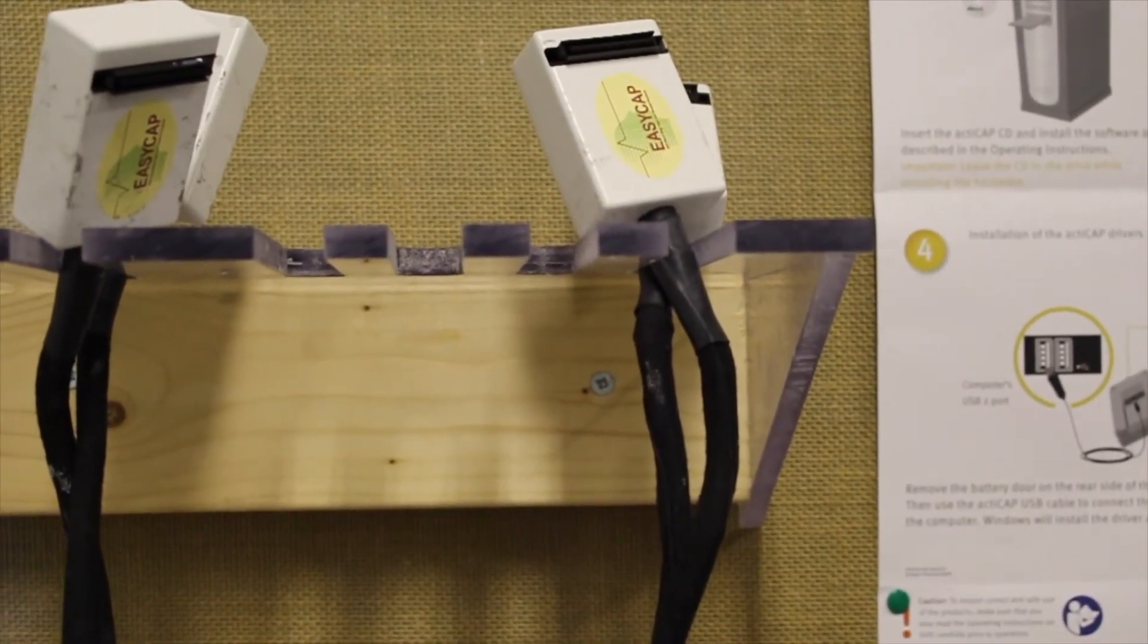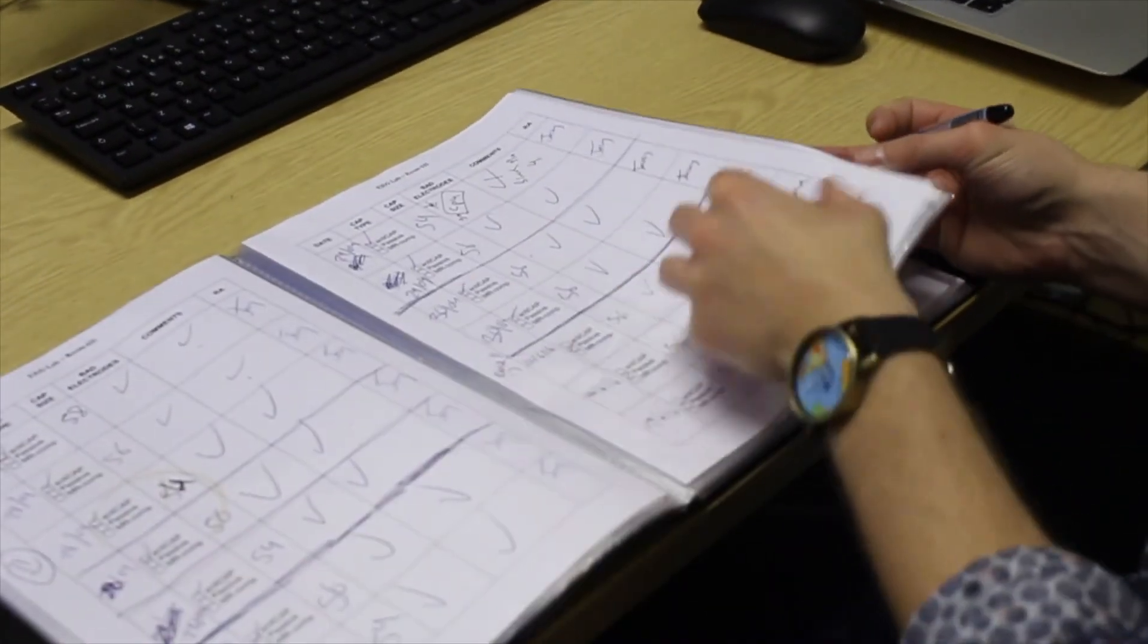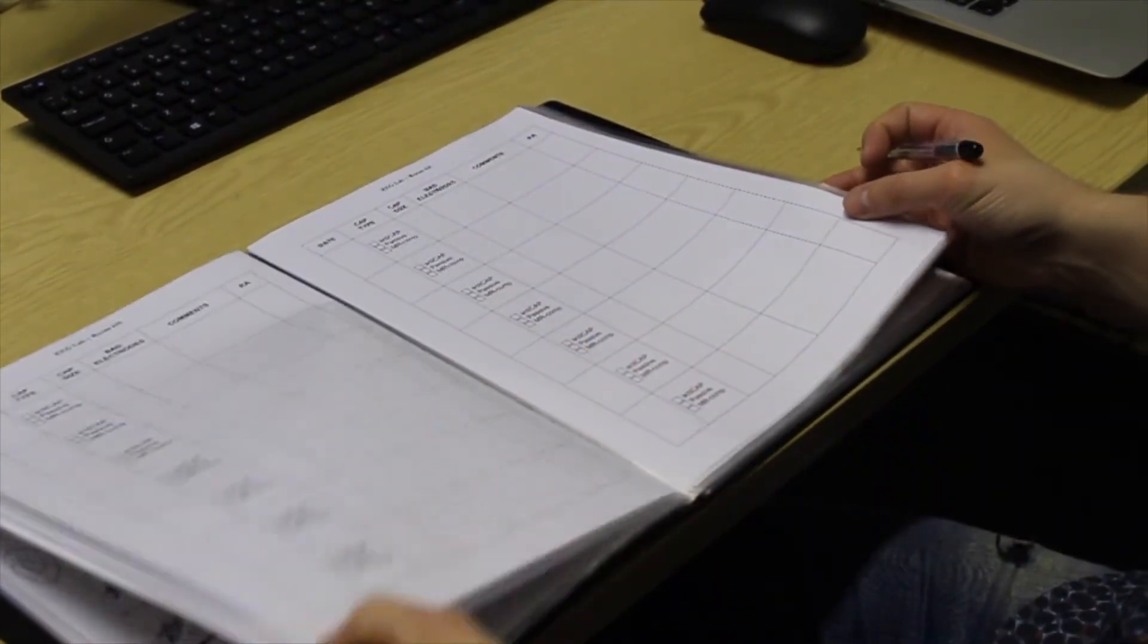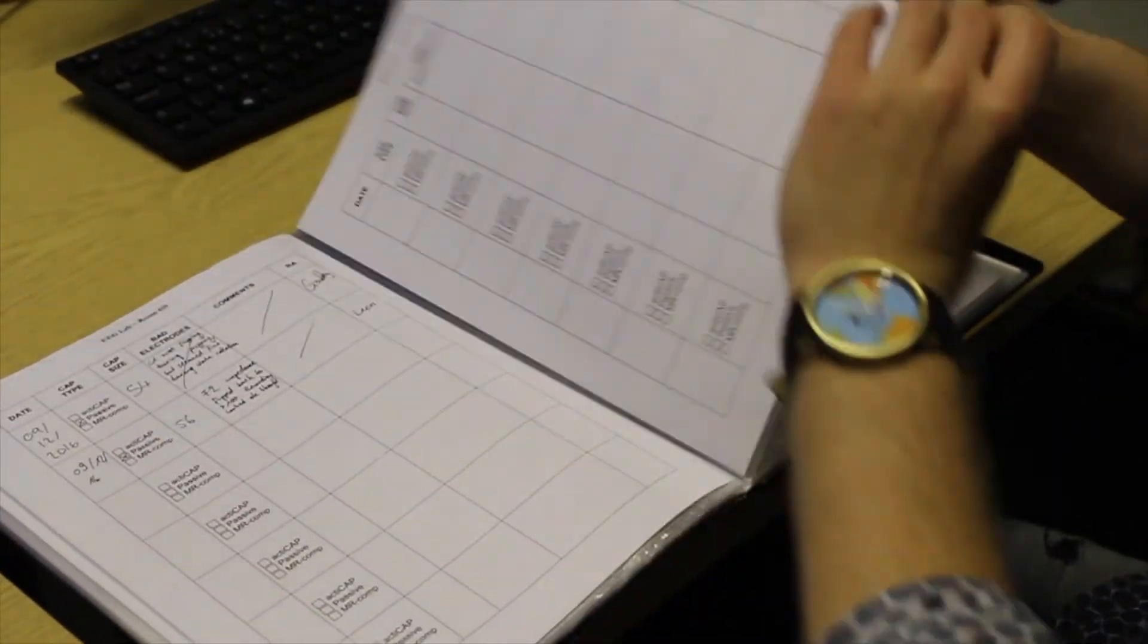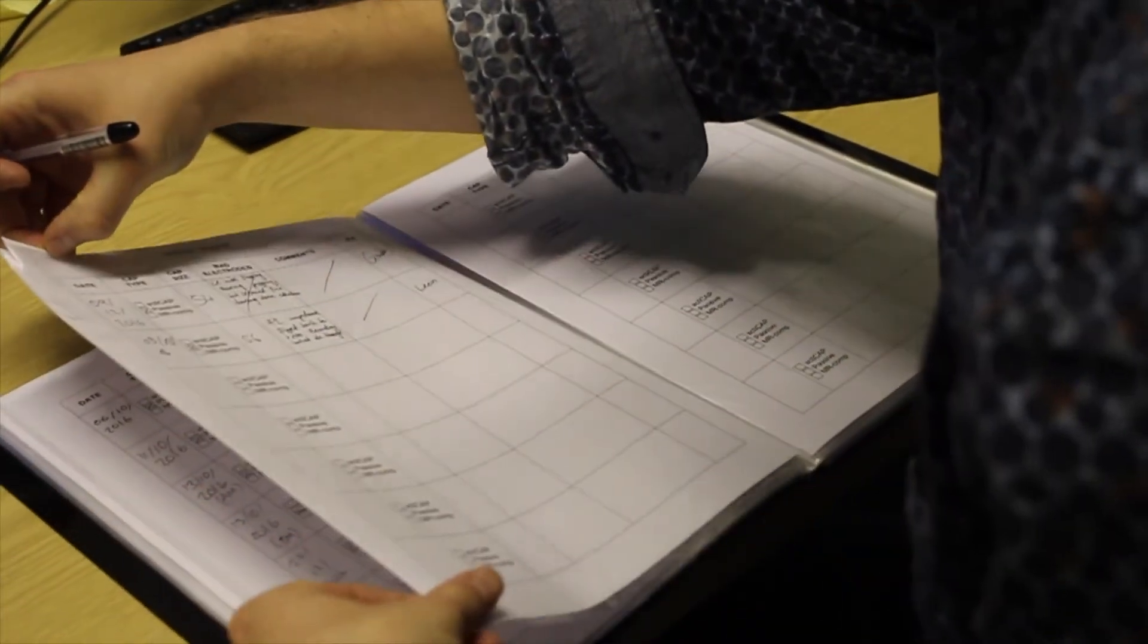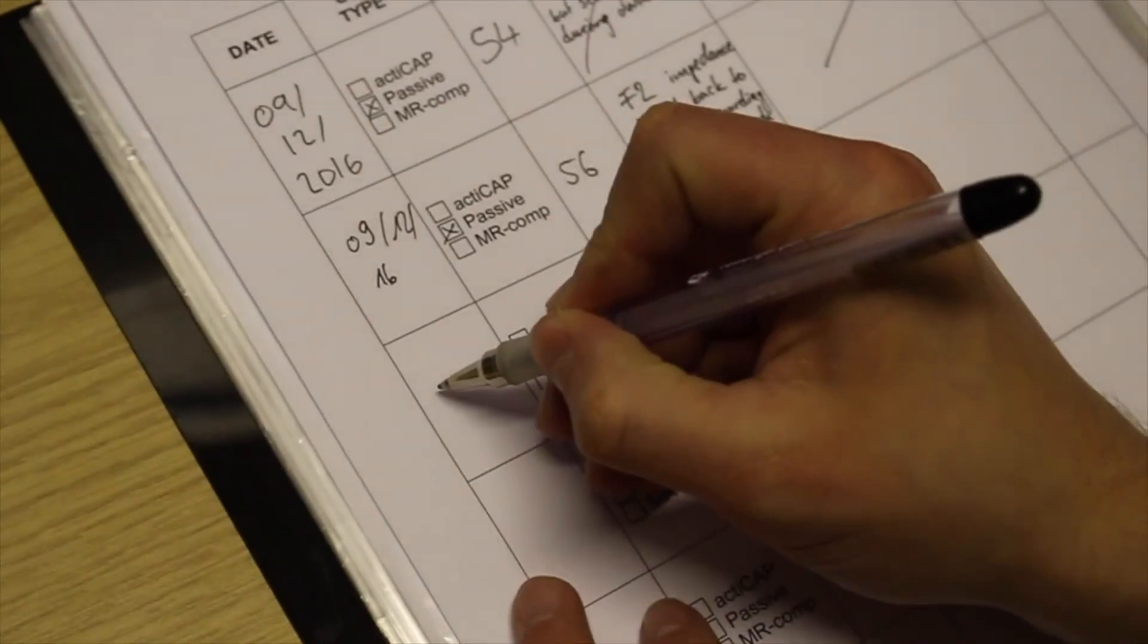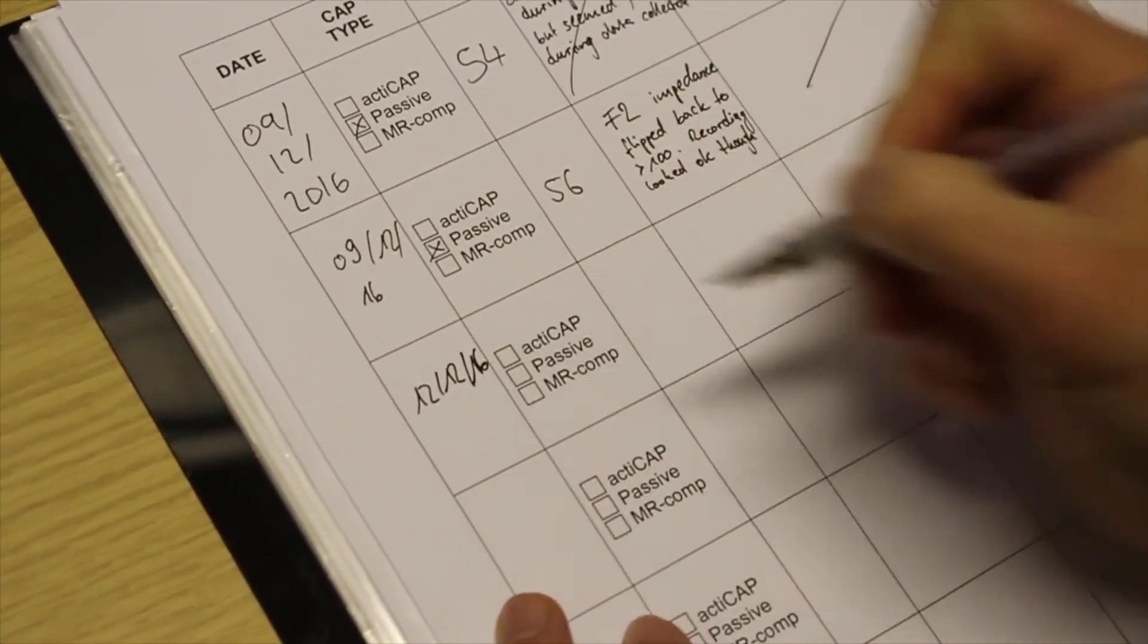You should log the details of every EEG session both for yourself and in the lab EEG log. This may be in the form of a physical book kept in the lab or it may be an online spreadsheet where you can add an entry each time you use the EEG room. This should include details of the size of the cap, who was running the experiment, and if you had any problems such as an electrode looking faulty.